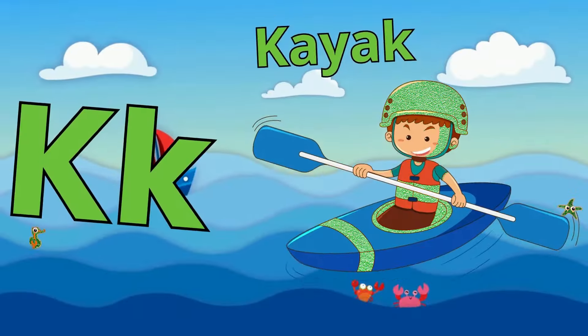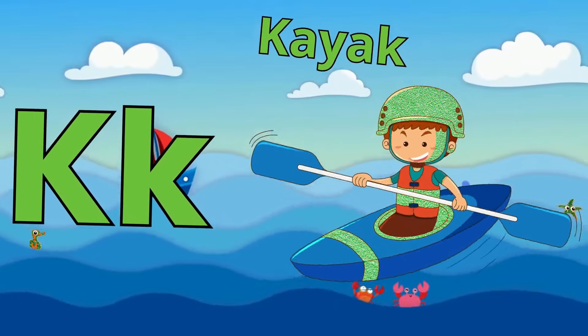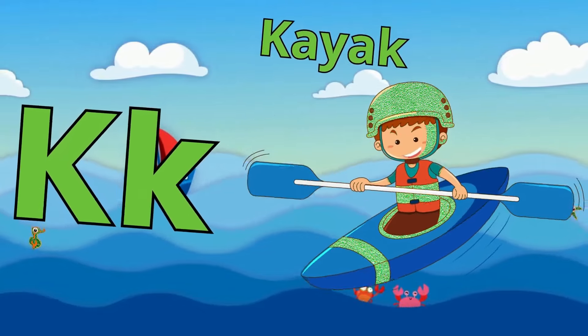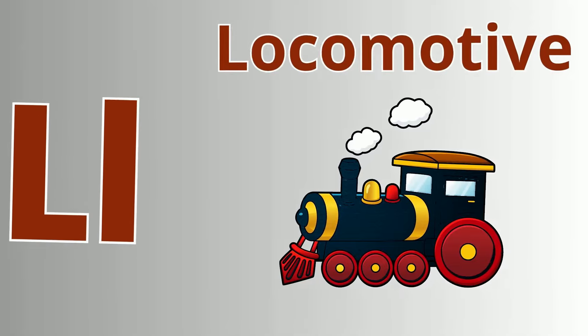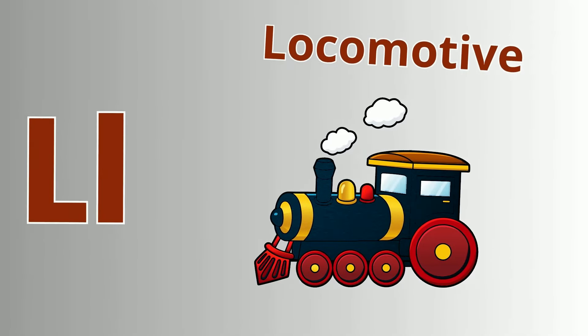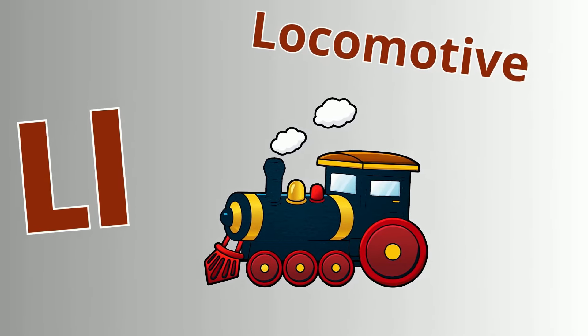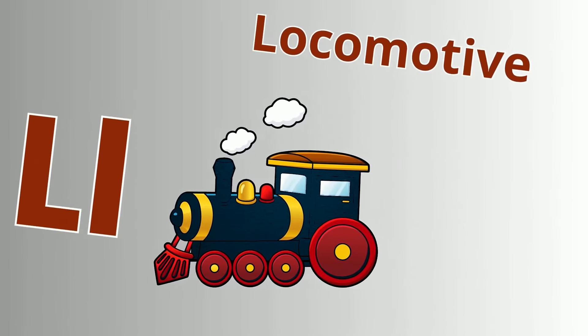K is for kayak, K-K kayak, paddle through the stream, splish-splash, kayak. L is for locomotive, L-L locomotive, chugging down the track, choo-choo, locomotive.